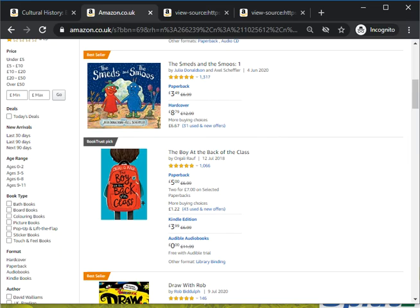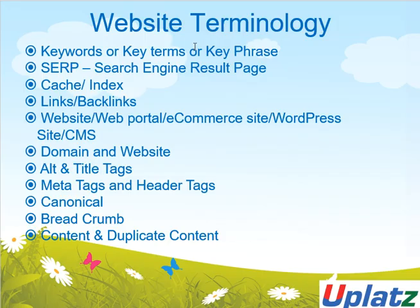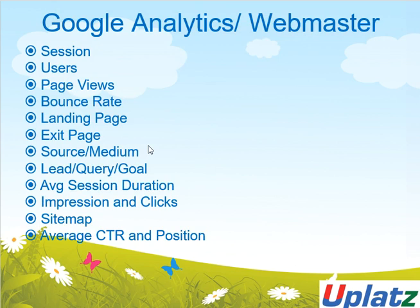This covers the first part: keyword, key term, SERP, cache, index, link, and backlinks — really very important for everyone who wants to make a career in digital marketing. Now there are some more very interesting terminologies associated with Google Analytics and Webmaster. I'll explain these fully when covering analytics and Webmaster, but let me give a small glimpse. The terms are: session, user, page, bounce rate, landing page, exit page, source, medium, query, lead, goal, average session duration, impression, and click.